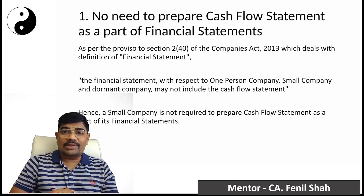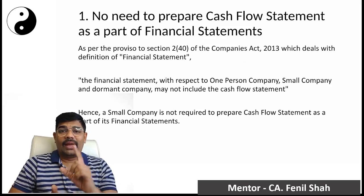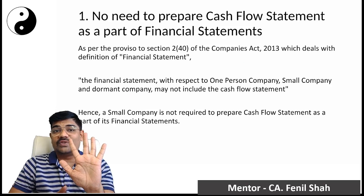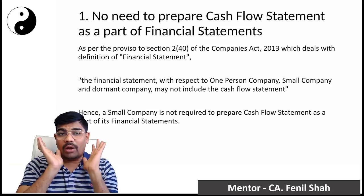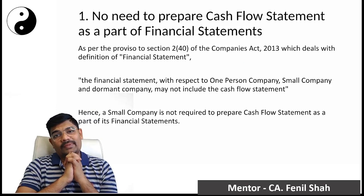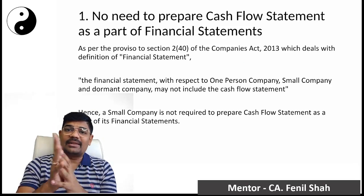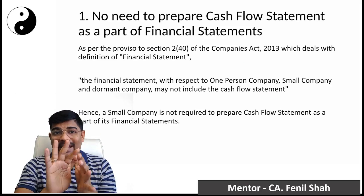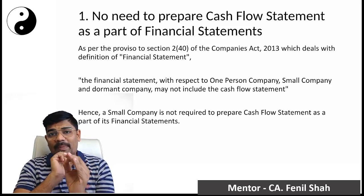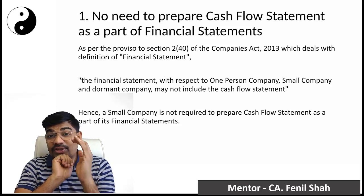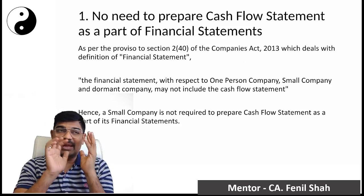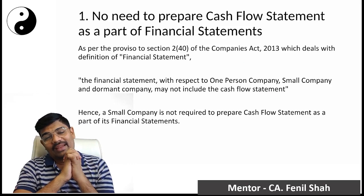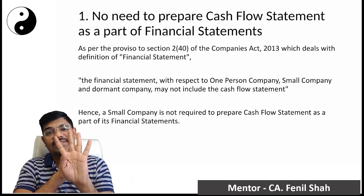The first benefit: normal companies must prepare financial statements consisting of five things — balance sheet, profit and loss account, cash flow statement, notes to accounts, and statement of changes in equity. However, under Section 2, Clause 40, Proviso, the financial statements for one-person companies, small companies, dormant companies, and inactive companies may not include cash flow statements. So a small company's financial statements comprise only four things: balance sheet, P&L, notes to accounts, and statement of changes in equity.